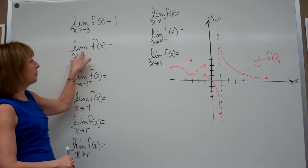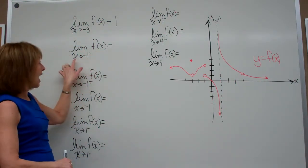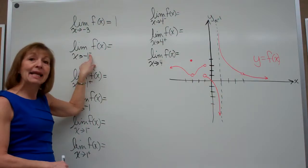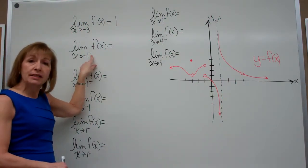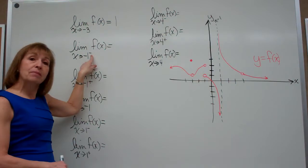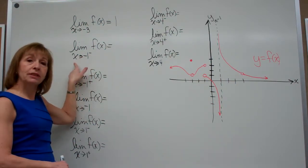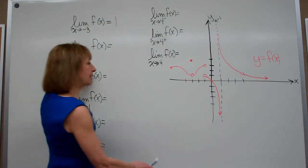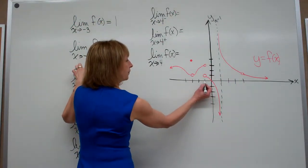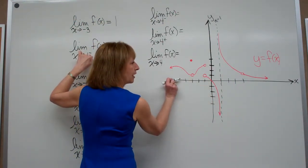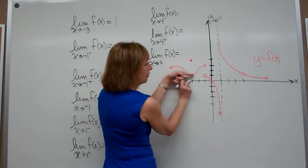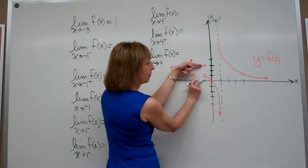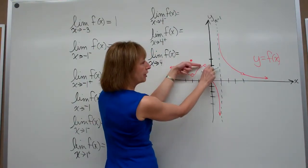The next one is the limit of my function values as x gets as close as we please to negative 1 with a minus sign after it. That's a one-sided limit — when there's a minus sign after it, you go infinitely close to that negative 1 from the left-hand side. So I find my x value of negative 1, and coming in from the left, the function values are approaching a y value of 3.